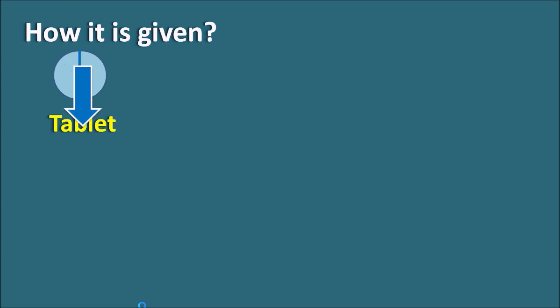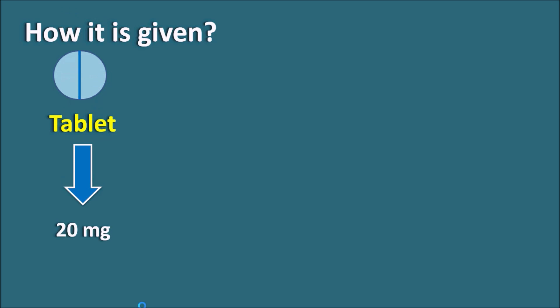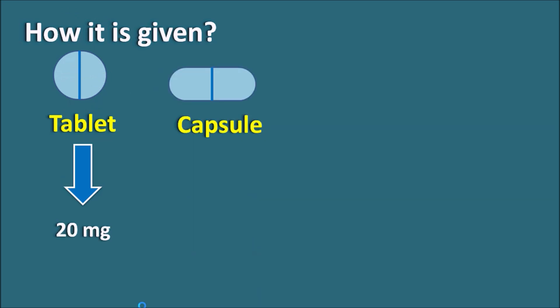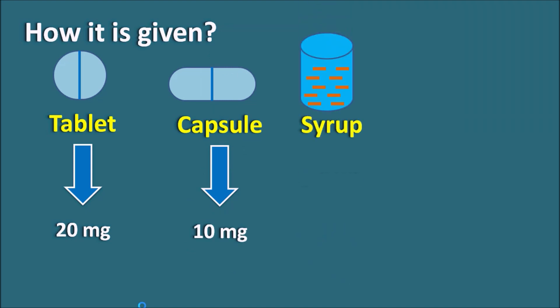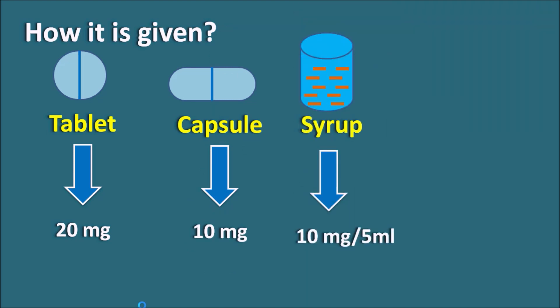How is it given? Dicyclamine is available as a tablet at a dose of 20 mg and as a capsule at a dose of 10 mg. It is also supplied as a syrup at a dose of 10 mg per 5 ml. The dose may be initially started at 10 mg and may be increased to 20 mg.